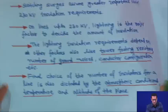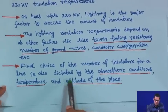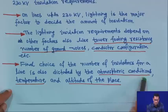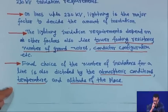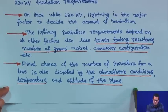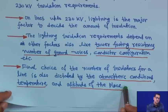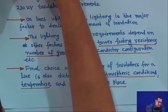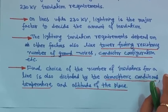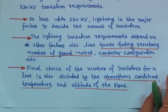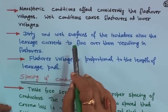The final choice of the number of insulators for a line is also dictated by atmospheric conditions, temperature, and altitude of the place. Many factors are associated with choosing the correct insulator for a particular voltage level. Atmospheric conditions affect flashover voltages — this is very important particularly for insulators.